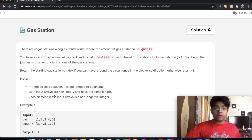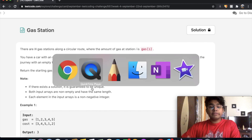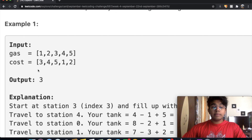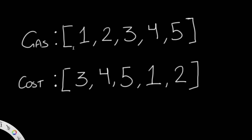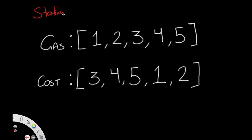One important thing to notice is that if there is a solution, it is guaranteed to be a unique solution. Now let's visualize what the question means using example one. We have the gas array and the cost array with the same values. I'm going to create one more thing called the station, which represents each of our gas stations — station zero, station one, station two, station three, and station four.